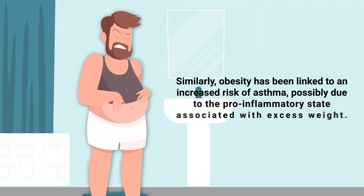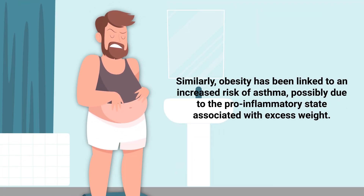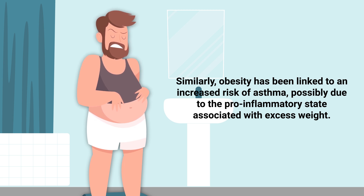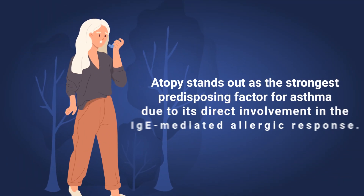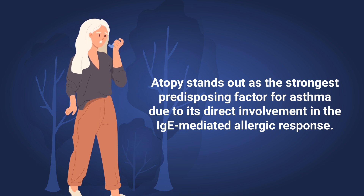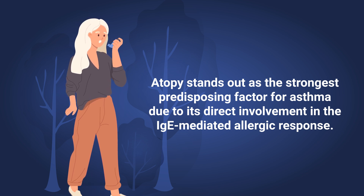Similarly, obesity has been linked to an increased risk of asthma, possibly due to the pro-inflammatory state associated with excess weight. But as previously mentioned, atopy stands out as the strongest predisposing factor for asthma due to its direct involvement in the IgE-mediated allergic response.